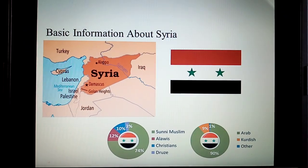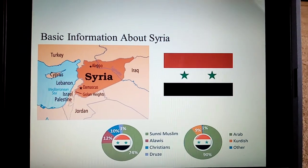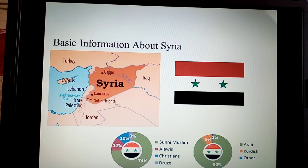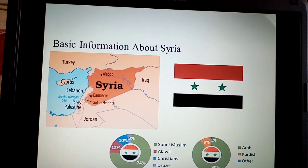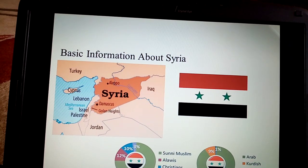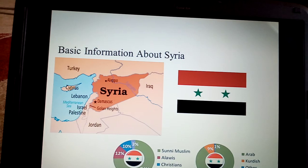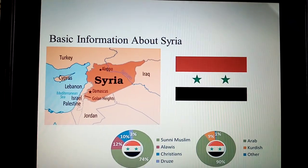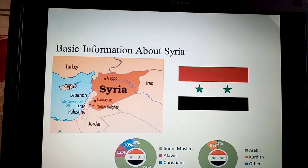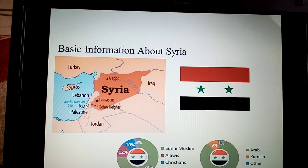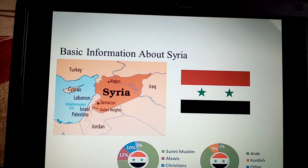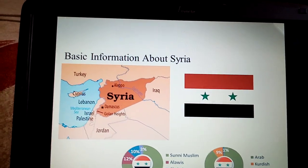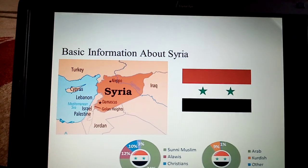Here is some brief information about Syria. The main population of Syria is considered Sunni Muslim, making up approximately 74%, and also including the Alawites, Christians, Druze, Arabs, Kurds and others. Right now we know that Kurdish people in northern Syria are trying to proclaim their independence and establish a Kurdistan state.